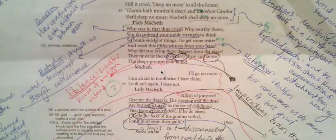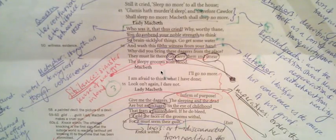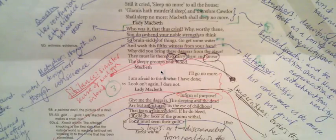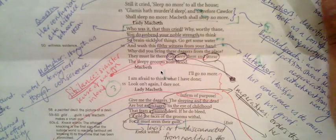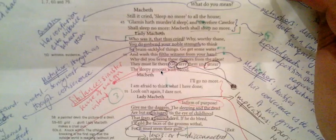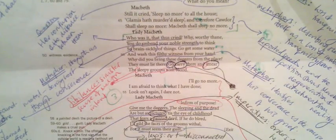The beginning of the climax shows Lady Macbeth's effort to take control while Macbeth talks about his hallucinations. Lady Macbeth simply says 'Who was it that thus cried?' and there's almost a sense of distance because she keeps asking questions that Macbeth is unable to respond to.